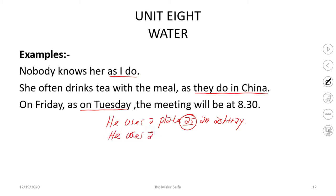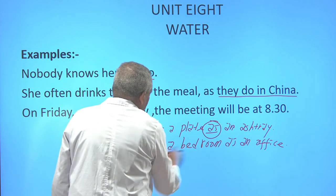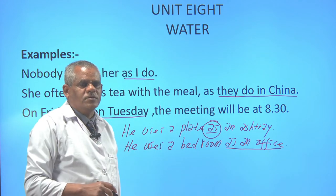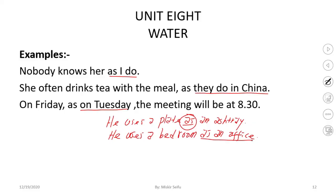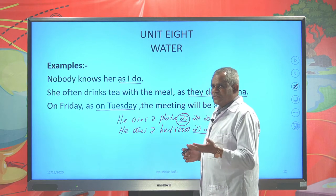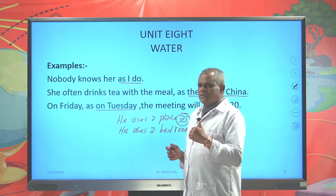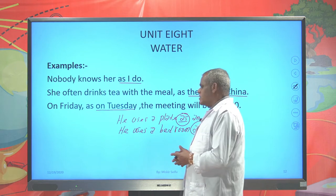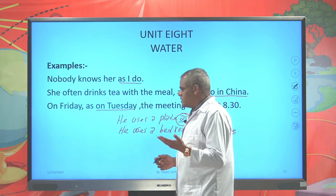'He uses a bedroom as an office.' What is the function of his bedroom? Just an office — it is functioning as an office. Everything is available there: a desktop, files on the shelves, different kinds of stationery. Therefore, his bedroom is functioning as an office. He brings every task there and completes his work. So in such a case, say 'as an office,' not 'like an office.' That is purpose.